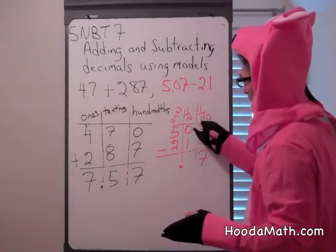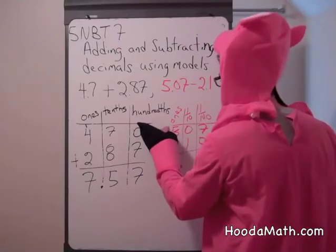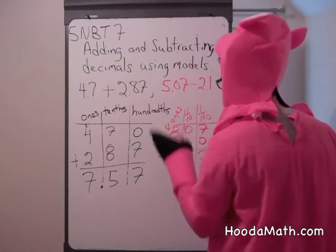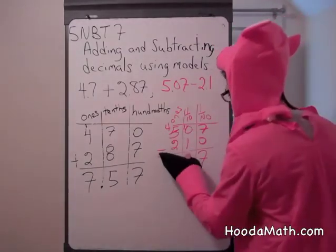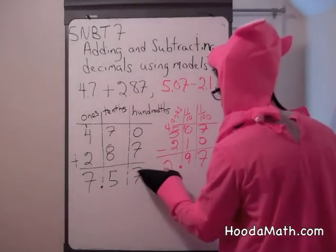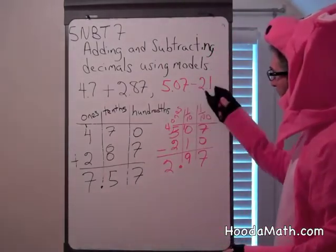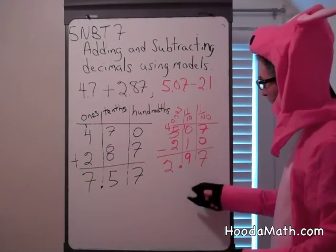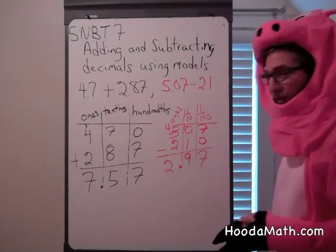We can't take one from zero, so we regroup: make this forty plus ten. Ten minus one is nine, and four minus two is two. Five and seven hundredths minus two and one tenth equals two and ninety-seven hundredths.